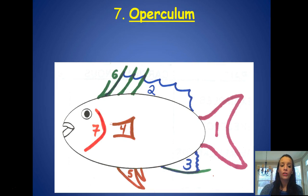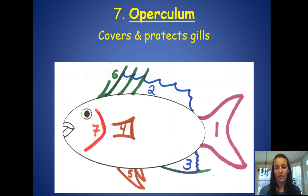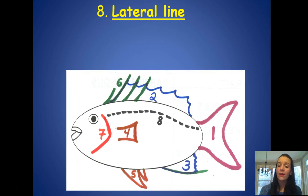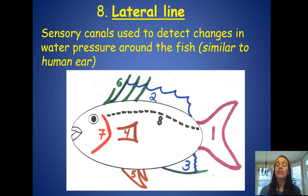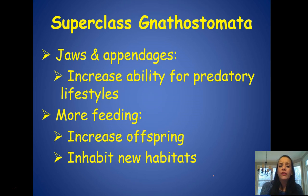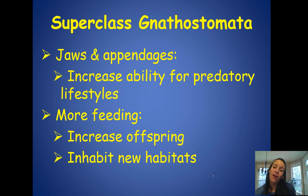The operculum covers and protects the gills. The lateral line runs the length of the fish toward the top of its body — these are sensory canals used to detect changes in water pressure, very similar to our ears. Jaws and appendages also increase the ability for predatory lifestyles and broader feeding, which results in more offspring and the ability to inhabit new habitats due to a wider range of prey.